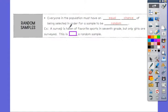A survey is taken of favorite sport in seventh grade but only girls were surveyed. Since only girls were surveyed, this is not a random sampling. If they picked people at random in the seventh grade, that could be a random sampling.